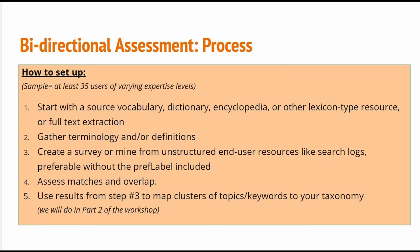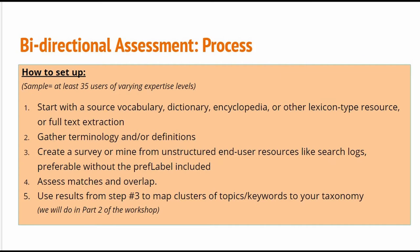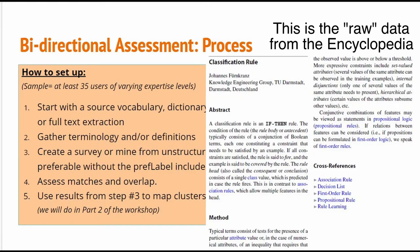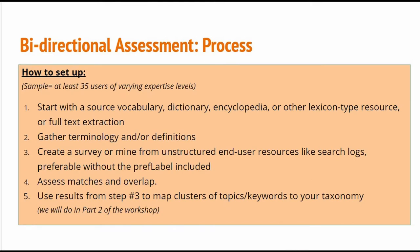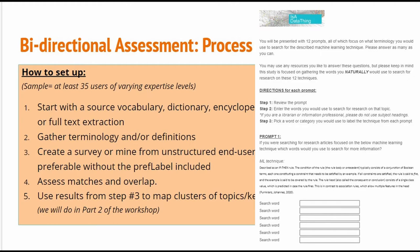Other lexicon sources are controlled vocabularies, and for this exercise I actually used the Encyclopedia of Machine Learning and Data Science. The second thing you need is to gather the terminology and definitions you want to use — this is more project-based. You want to focus on one piece of your taxonomy at a time, and make sure you get something with text like a definition or scope note. If you are going the more ethnographic route, you will want to create a survey, which we'll cover in the second part of this video.